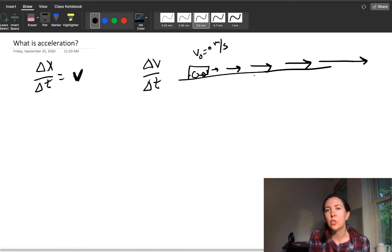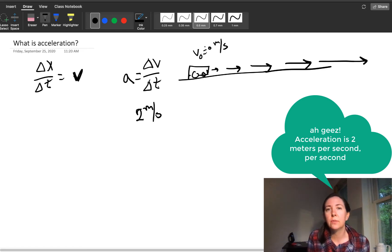How my velocity changes over time, that's acceleration. So if my acceleration is, let's say, 2 meters per second, and my initial velocity is 0, then one second later my velocity will be 2 meters per second.